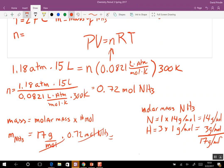The mass of NH3 now is 17 grams per mole times 0.72 moles of NH3. So what do you get? 10.08 grams of NH3.